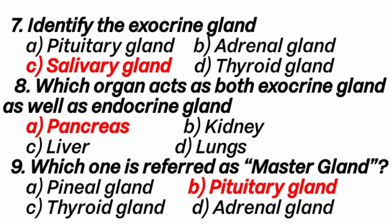7th question: identify the exocrine gland. Answer is C option: salivary gland. Because pituitary gland, adrenal gland, and thyroid glands are endocrine glands. The difference between exocrine and endocrine glands: exocrine glands have ducts, so they are called ducted glands. Endocrine glands are ductless glands because of the absence of ducts — secretion is directly mixed with blood.